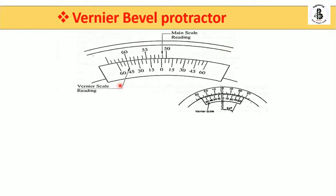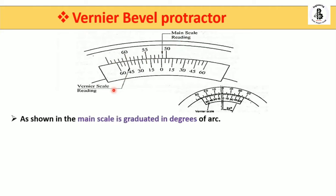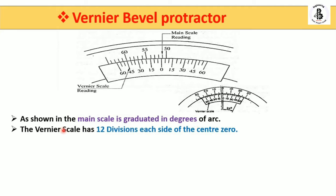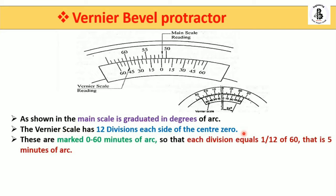Now how you can take the reading — that is also one of the important parts. Basically there are two kinds of scales: the main scale readings and the vernier scale readings. As shown, the main scale is graduated in degrees of arc. The vernier scale has 12 divisions each side of the center zero, covering 0 to 60 minutes of arc, so each division equals one-twelfth of 60, which means 5 minutes of arc.